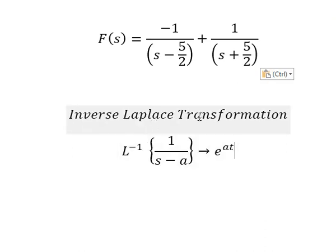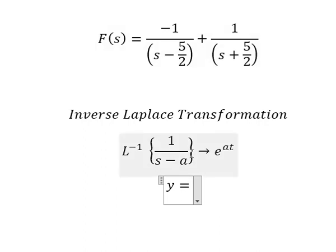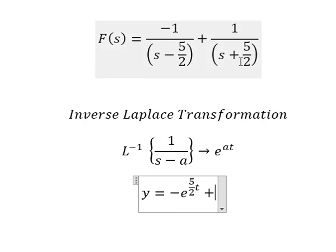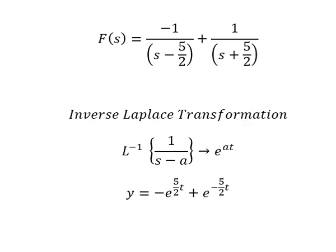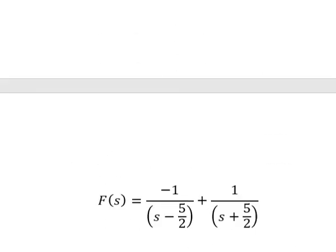Applying the inverse Laplace transformation: for the first term, a equals 5 over 2, so we get negative e to the power of (5/2)t. For the second term, a equals negative 5 over 2, giving us e to the power of negative (5/2)t. This is the full answer to the question. Thank you for watching.